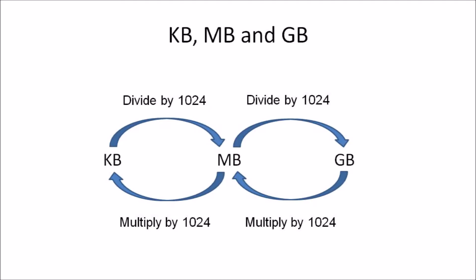If you're converting from a larger unit to a smaller unit — for example, megabytes to kilobytes or gigabytes to megabytes — you always multiply. To summarize: larger to smaller, always multiply; smaller to larger, always divide. The conversion factor between these three units of measurement is always 1024.